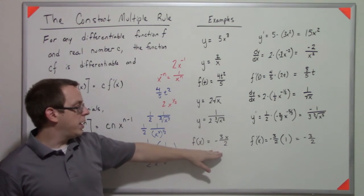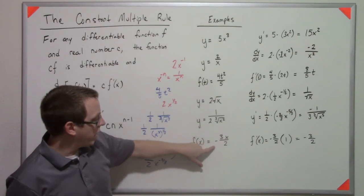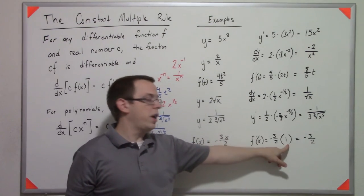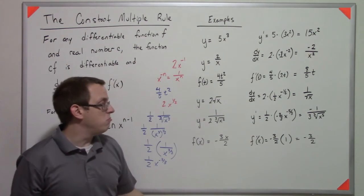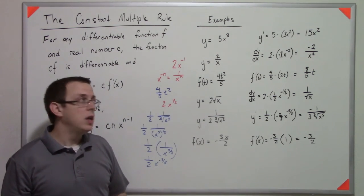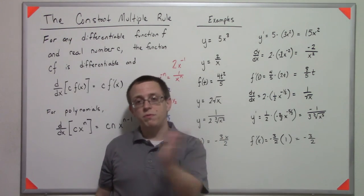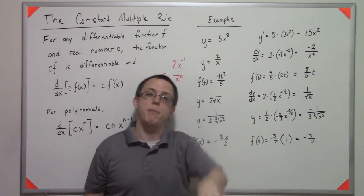Finally, we have f of x equals negative 3x over 2. What we're going to do is just bring out that negative 3 halves. The derivative of x is 1. So the answer is just negative 3 halves. And ultimately, what you're finding here is for the constant multiple rule, we just factor out the constant to the front, don't deal with it, and multiply it back in when we're done.